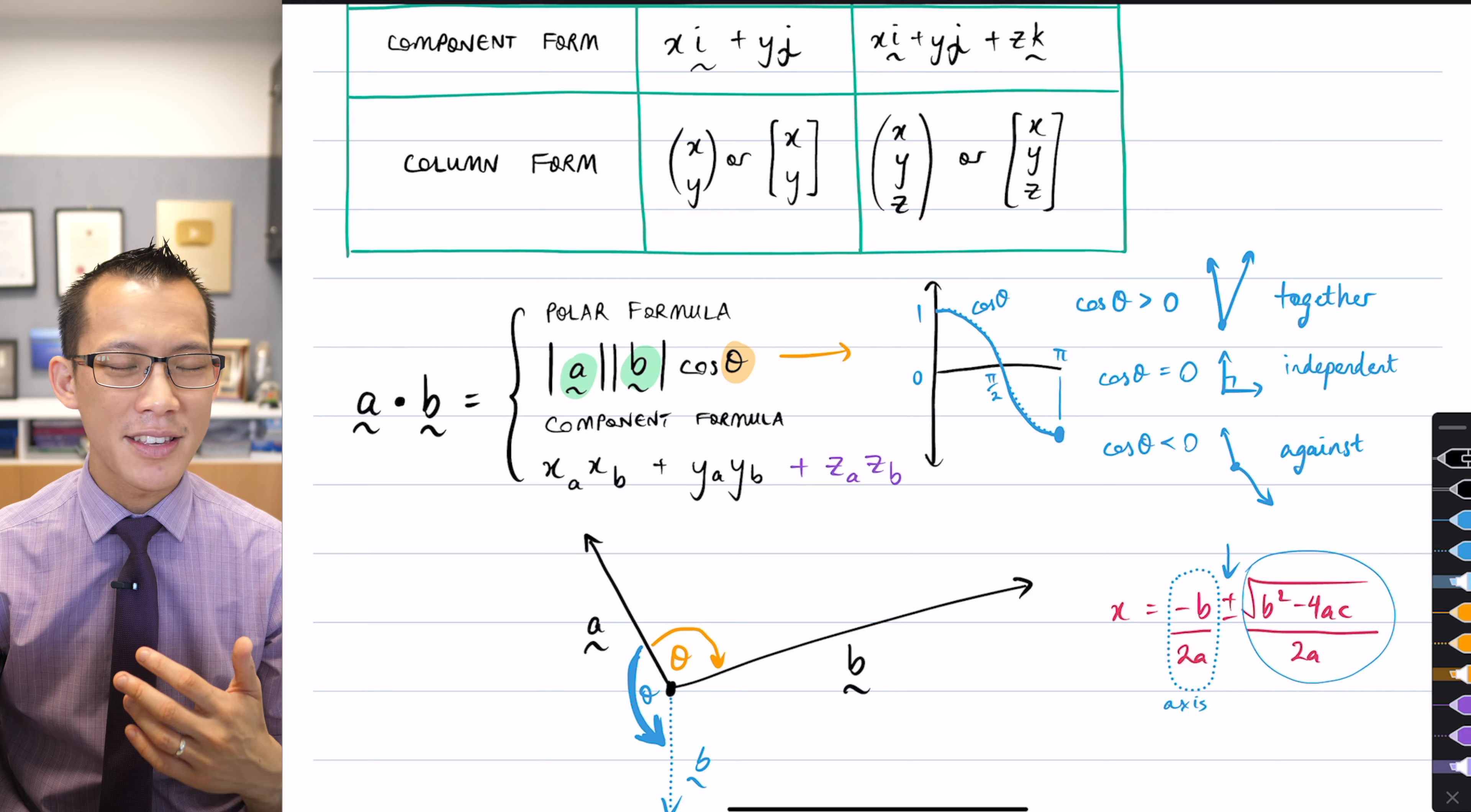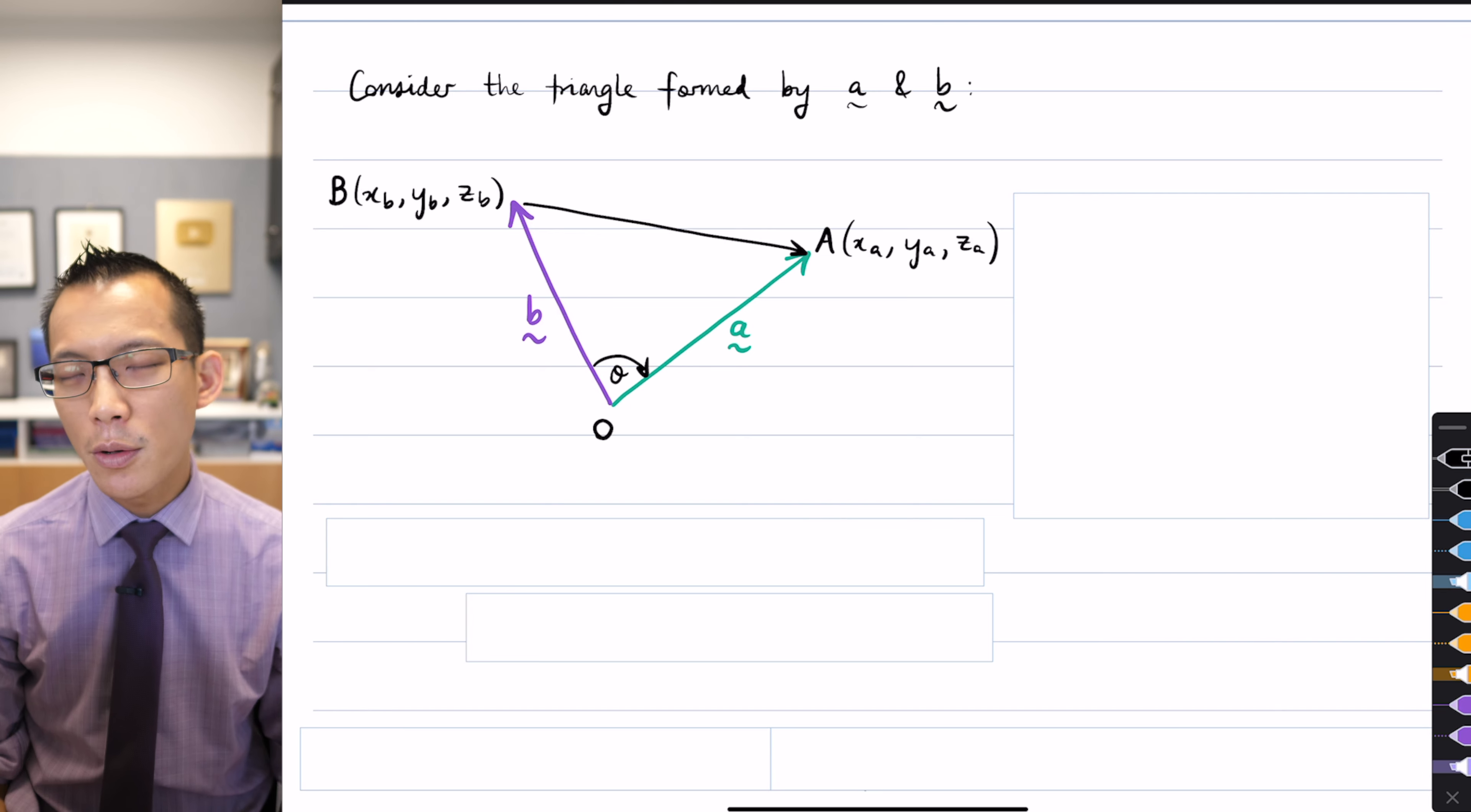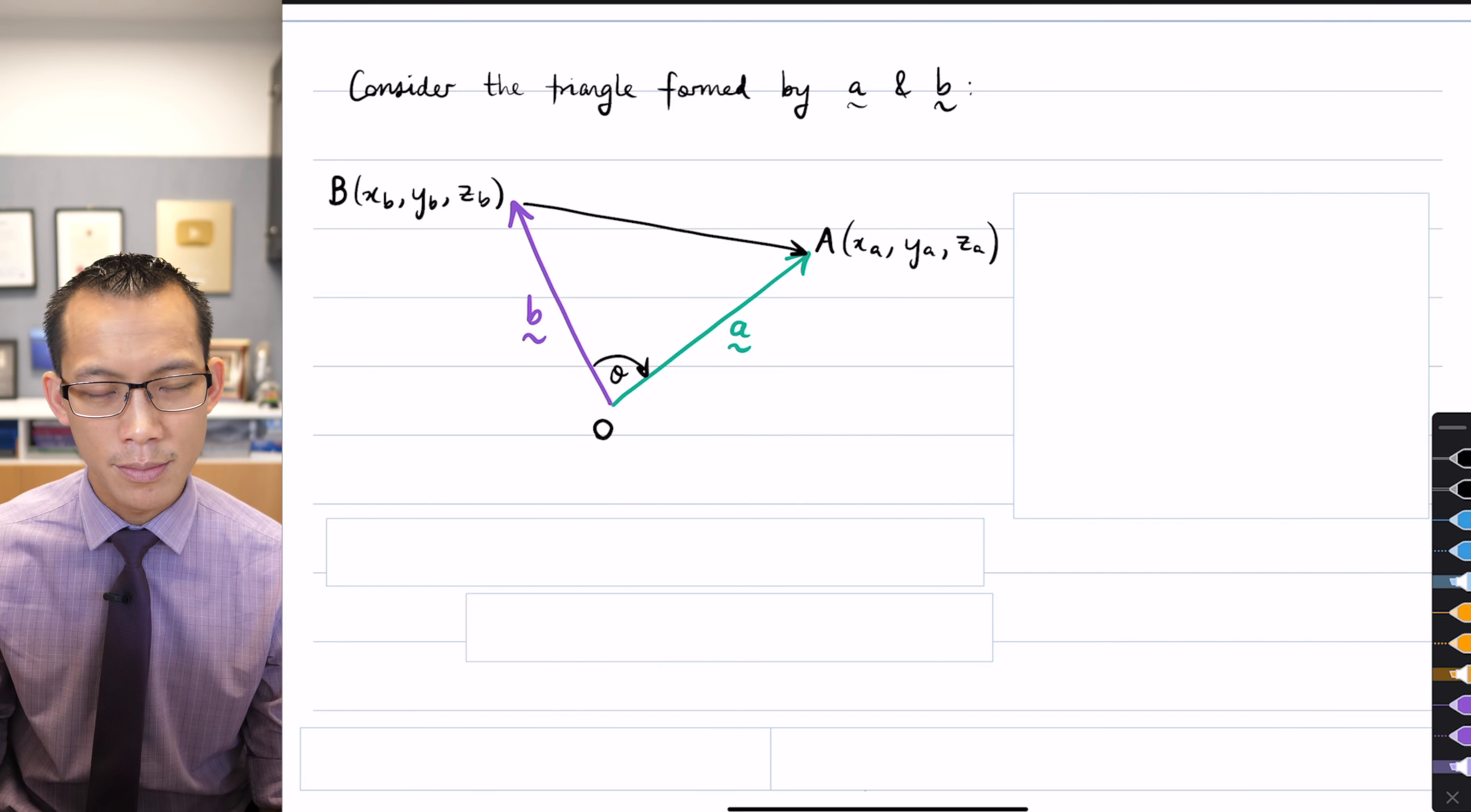What I want to now do is I want to move forward, and maybe you could actually help me by drawing this diagram. You know their x's and y's and z's, right? You know them in component form or in column form.